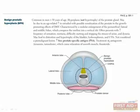Benign prostatic hyperplasia, or BPH, is a common enlargement of the prostate gland in older men. The prostate, to some extent, is under the control of dihydrotestosterone, which is why the drug finasteride is effective in this condition. Finasteride blocks the conversion of testosterone to DHT, decreasing enlargement of the gland.